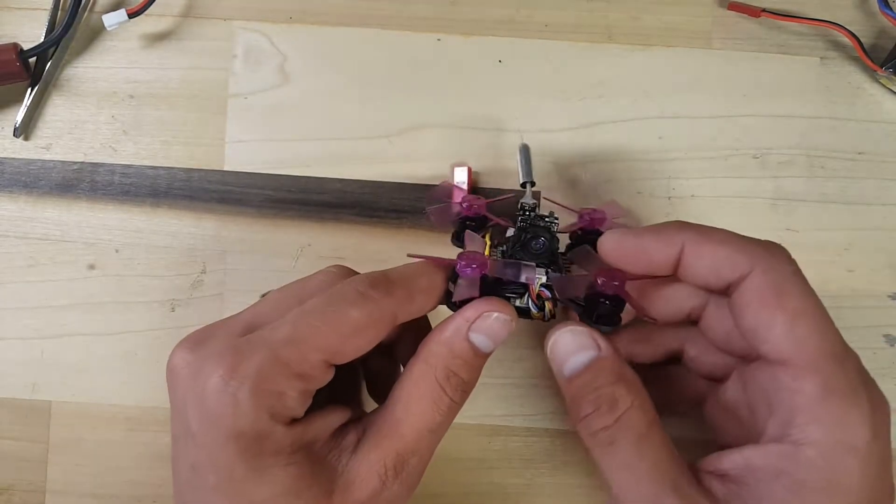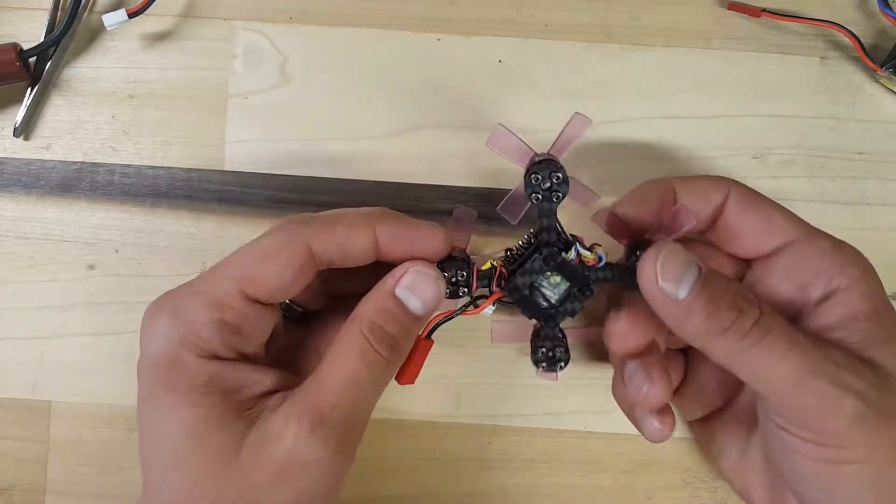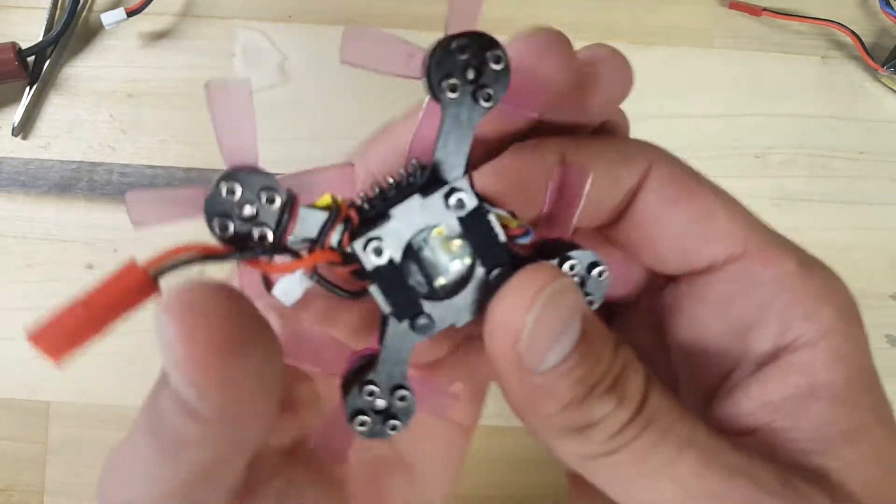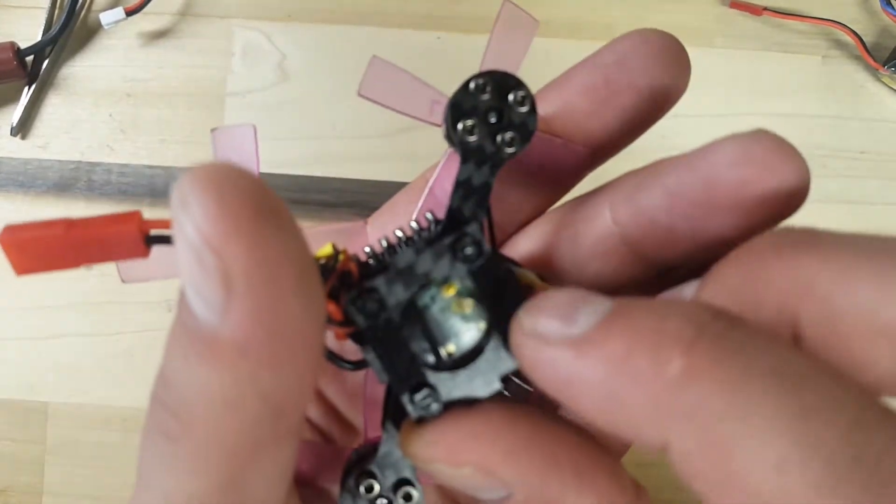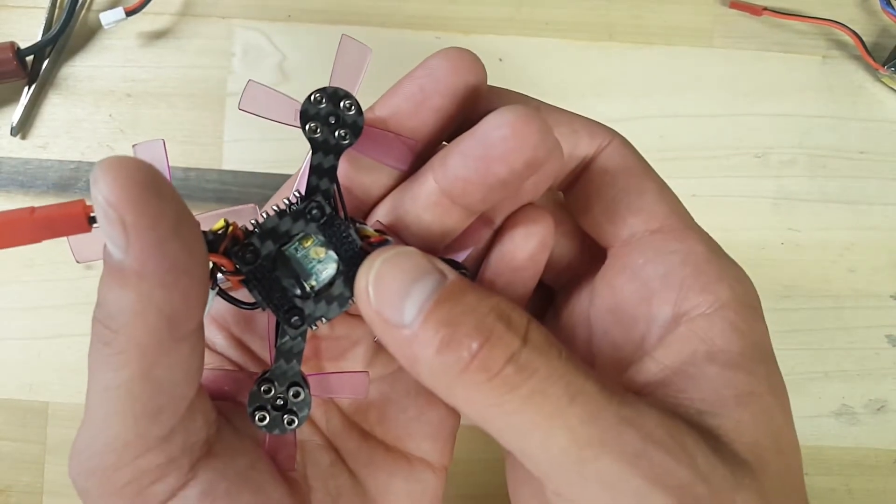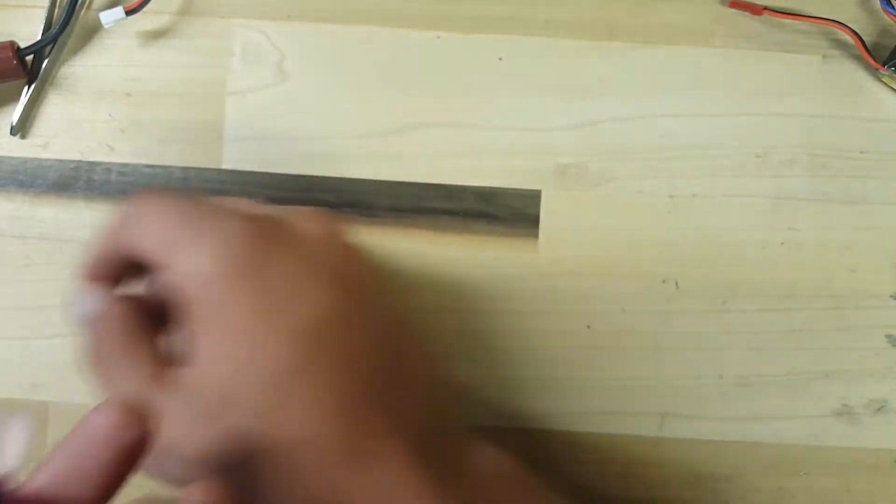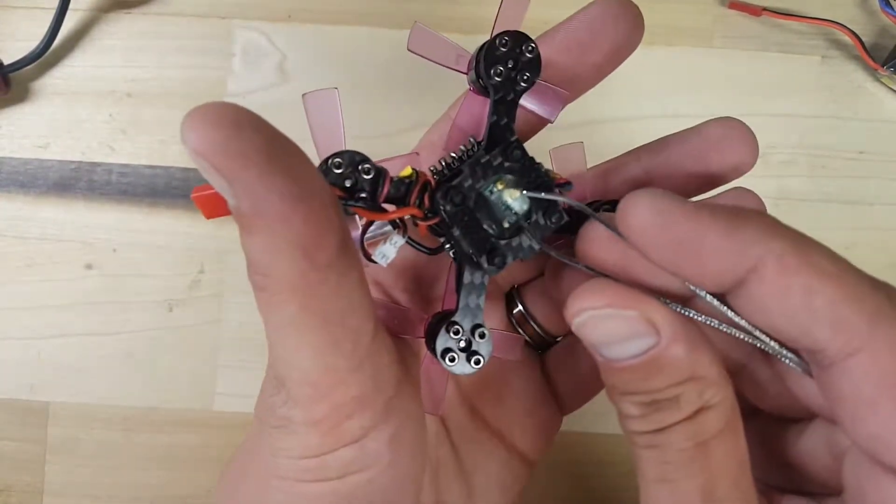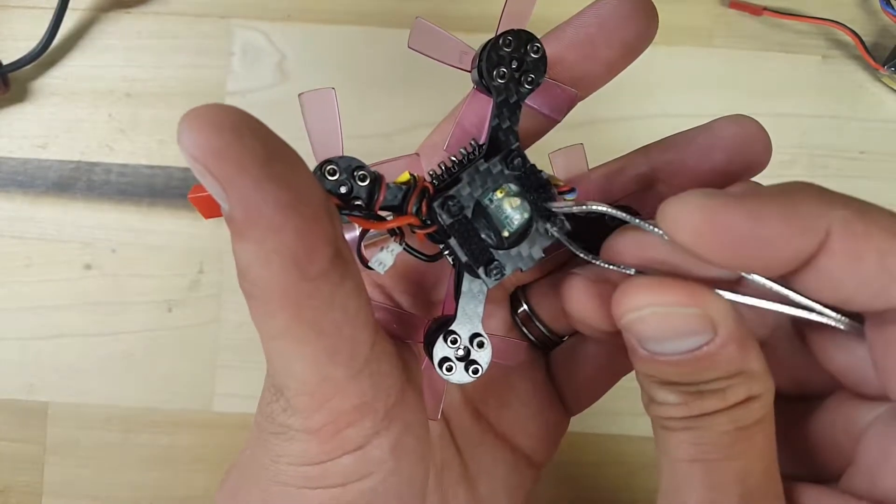The receiver that comes with this one that I got is the FR Sky XM micro receiver. You'll notice here on the bottom right is your bind button.